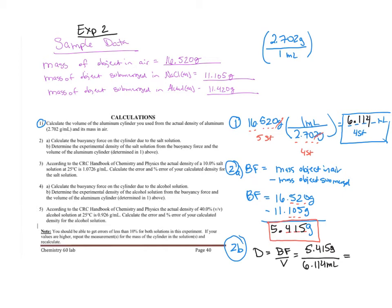Keeping track of sig figs - 6.114 - always important. So my final answer with four significant figures is 0.8857. Units: grams per milliliter. Put a box around my final answer.